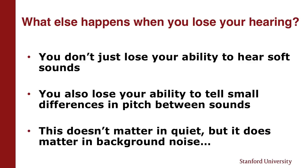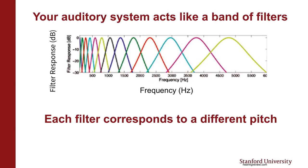What else happens? You don't just lose your ability to hear soft sounds. You also lose your ability to tell small differences in pitch between sounds or timing — in effect, you get a muddier signal to the brain when you start to lose your hearing, even if you make that sound loud enough. This doesn't really matter so much in quiet, but in background noise it's a lot trickier. Remember when I said your ear is like a frequency analyzer? It's almost like there's a little filter for each frequency — each bump corresponds to a different pitch. If you've got a normally functioning ear, you probably have about 15,000 of those filters. A normal hearing ear can tell the difference between a 1,000 hertz tone and a 1,001 hertz tone.